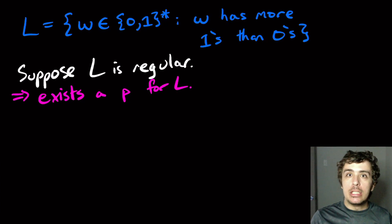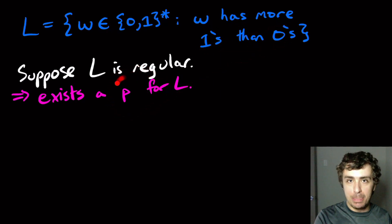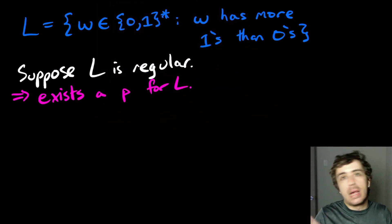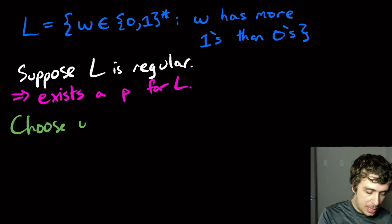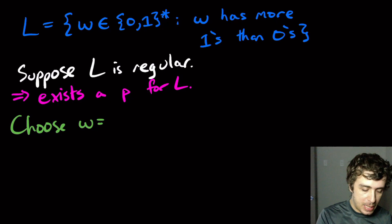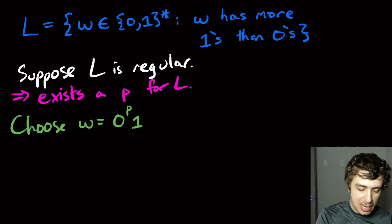So now what we need to do is we need to pick a string that's in the language and at least P characters long. So I got to pick a string, there are many that I could pick, where W has more 1s than 0s and has P characters in it. So we could just try to model a proof like 0 to the n, 1 to the n, and let's choose the following string. So let's pick 0 to the P. Well, I got to have more 1s than 0s. So let's pick, let's say, P plus 1.